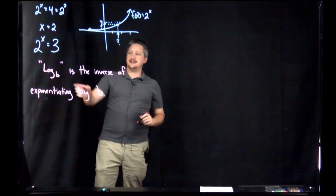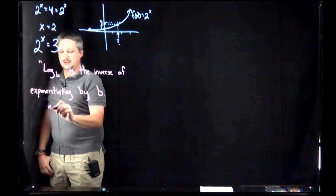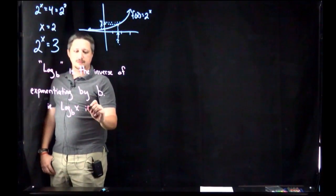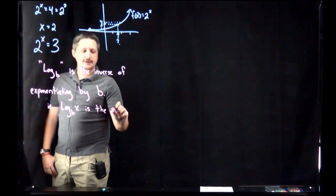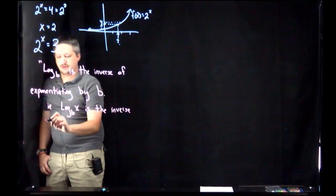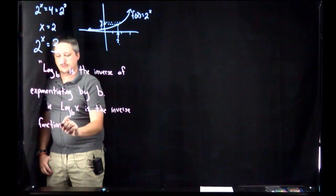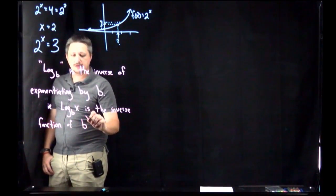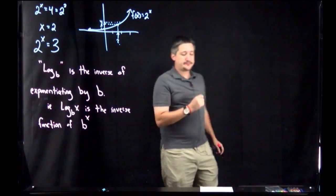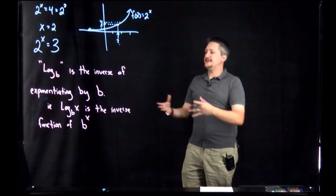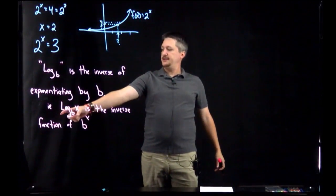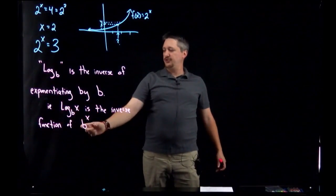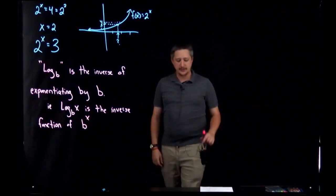What this means is that log base b of x is the inverse function of b^x. The whole idea here is that log base b is defined to be that inverse function that we know exists because it's one-to-one. It's the inverse function of whatever b^x is.